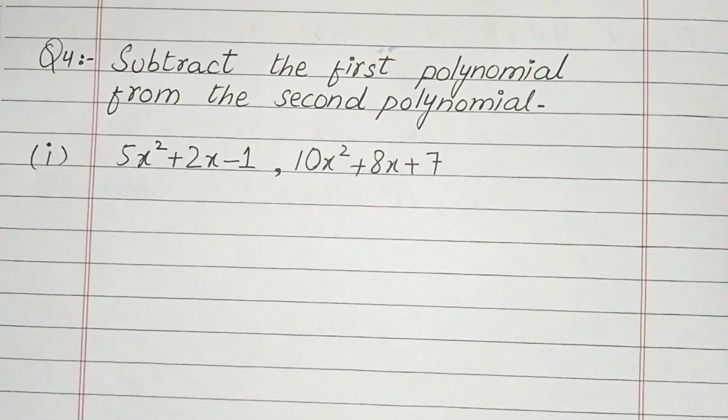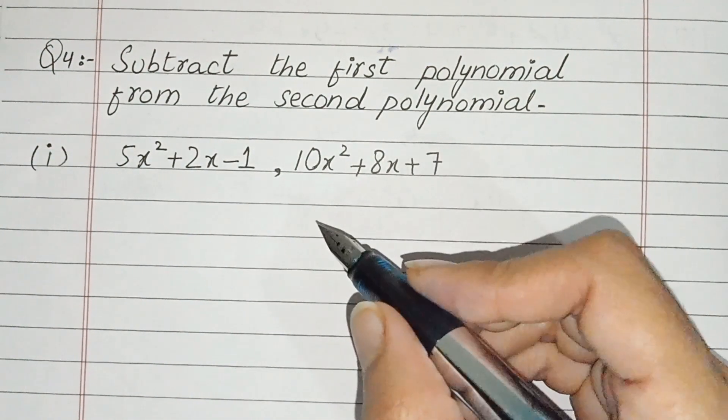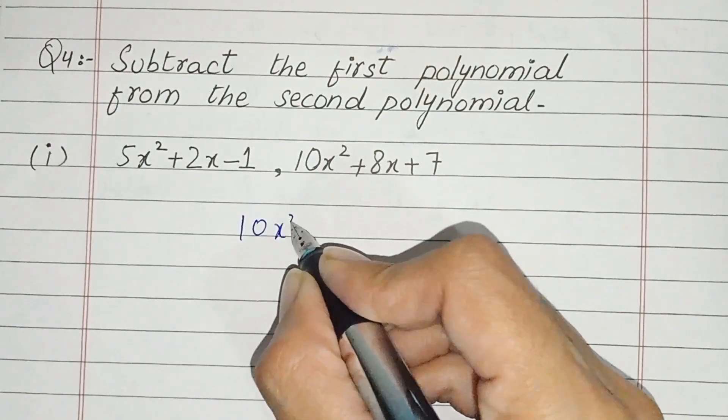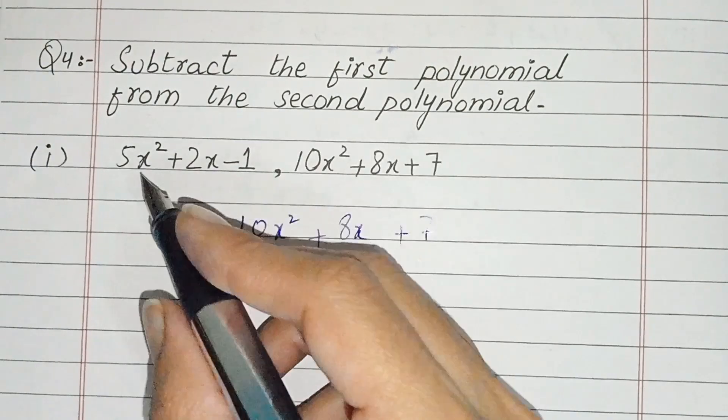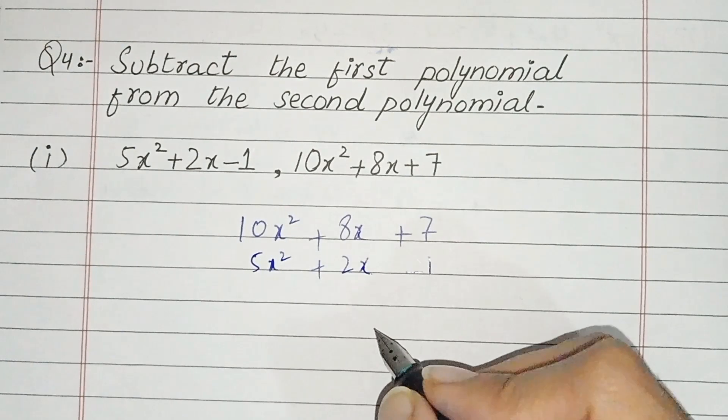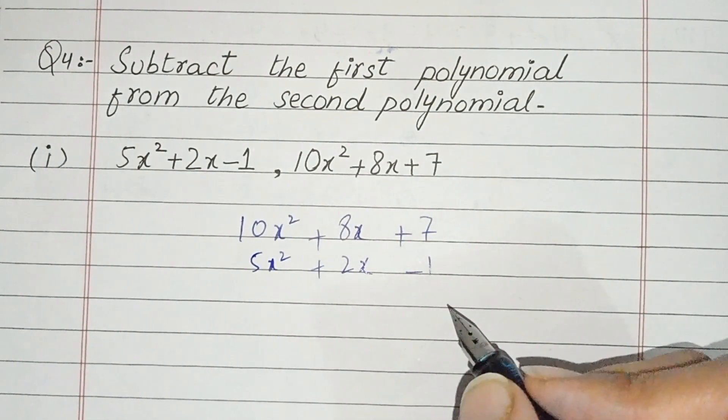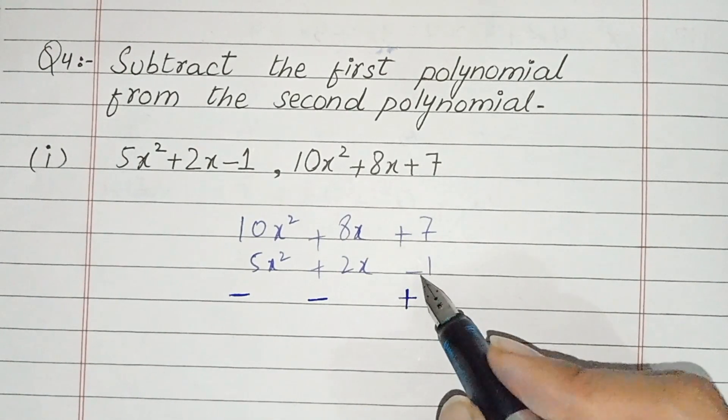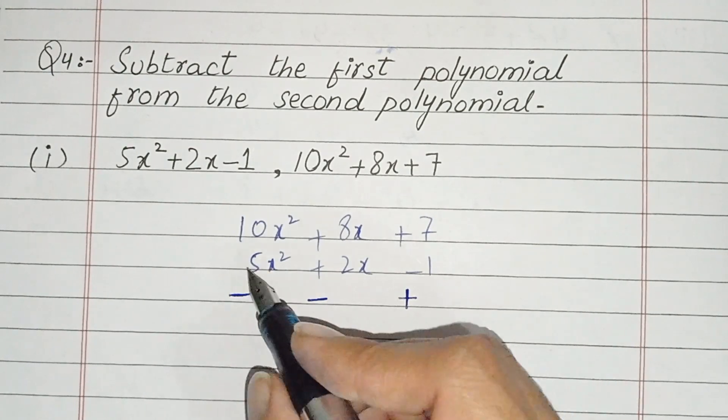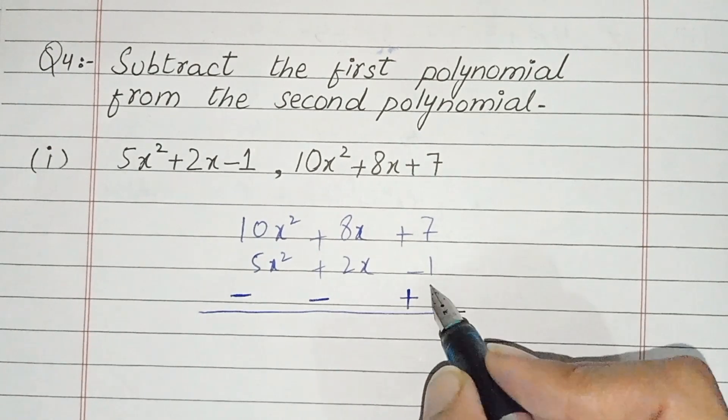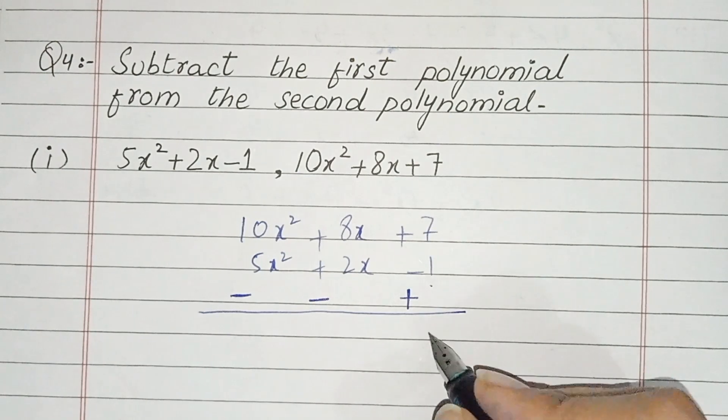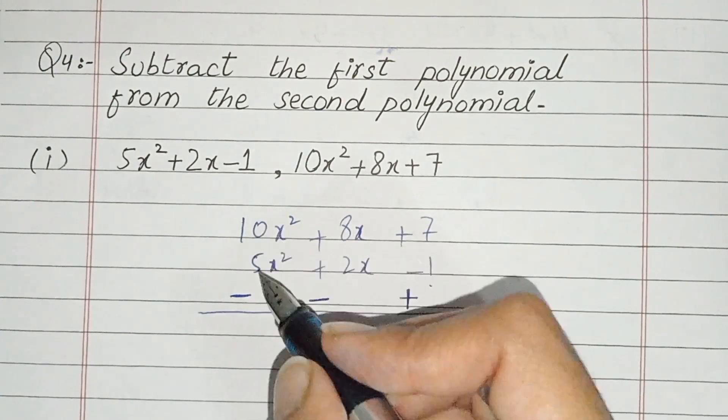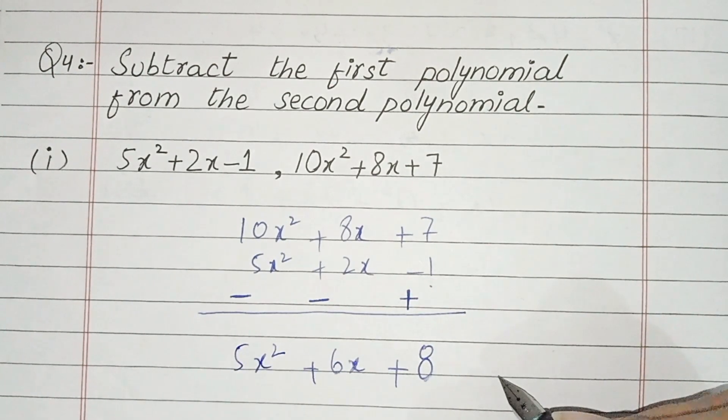Now question number 4: subtract the first polynomial from the second polynomial. We will subtract one polynomial from the second. This is the first one and this is the second one. We will write 10x square and we will write the first one. When we subtract the first one, we will change the sign. This is very important and this is the difference. This minus was minus 1, this was minus 2x plus, and this is also minus. Now we will solve this and consider the sign. 7 and 1 is 8, so we get plus 8. We will get 6x. We will get 5x square. This is the answer of part number 1.